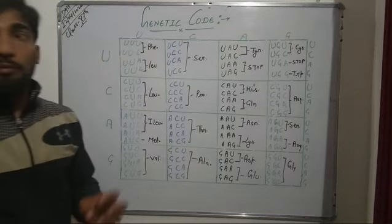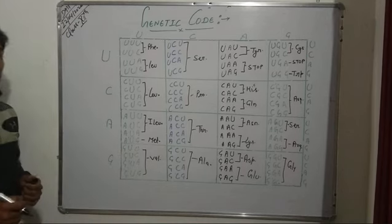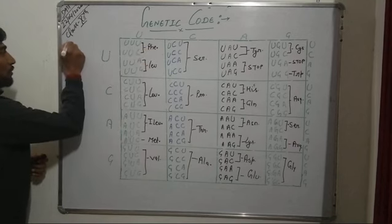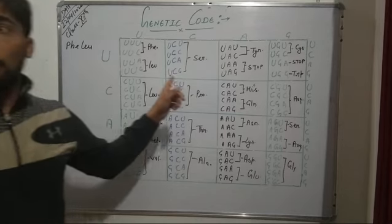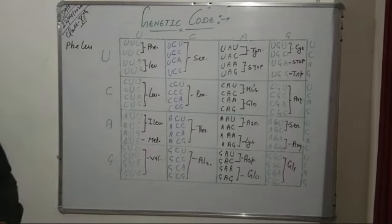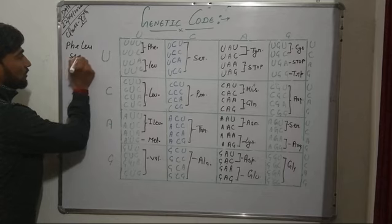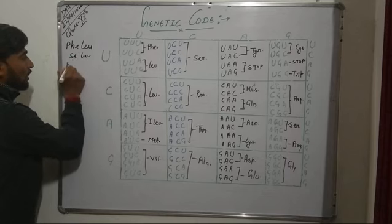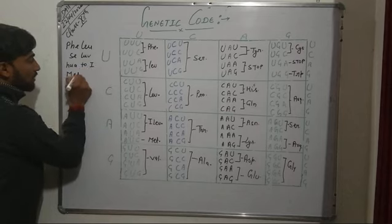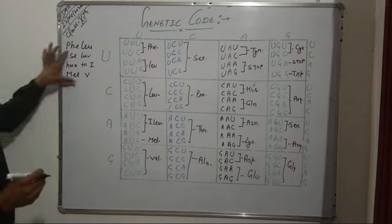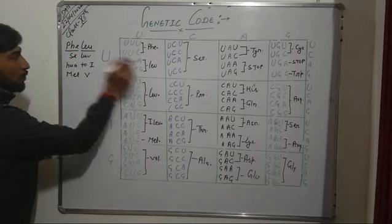Now, to remember this, we have made a short trick. For this line, the short trick is: phi-liu, se lao-va, to ai-met-vi. Phi is for phenylalanine, leu is for leucine — covering both the first and second columns.